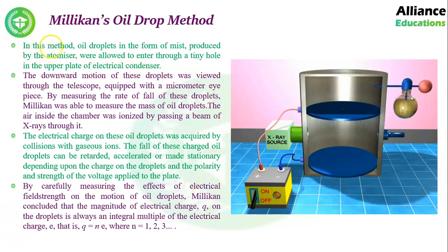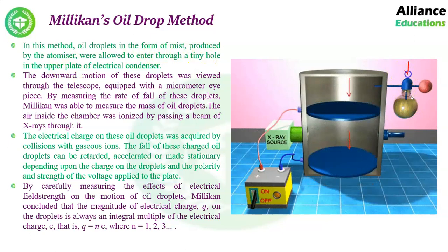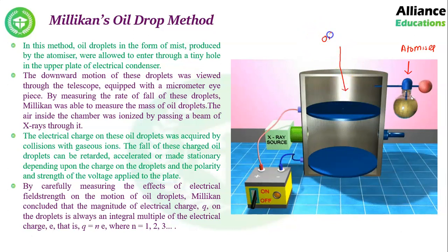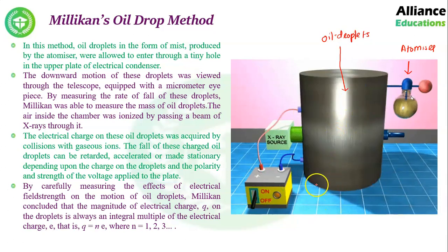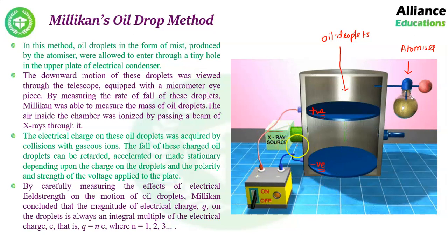In this method, oil droplets in the form of mist are produced by an atomizer. As you can see here, this is the atomizer — it is preparing fine droplets of oil. Two parallel plates are fixed here: the upper one is positively charged and the bottom one is negatively charged, connected to a source of EMF. A source of X-rays is also placed here, and a telescope with a micrometer eyepiece is set up for observation.